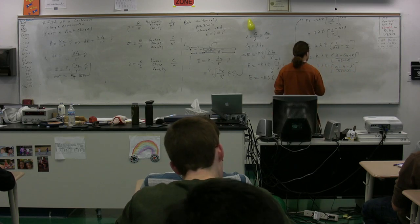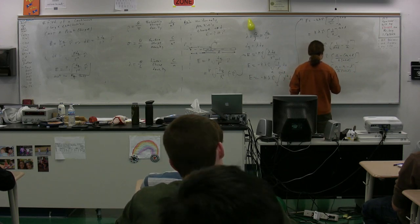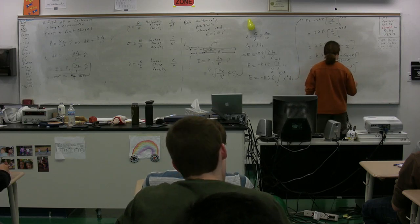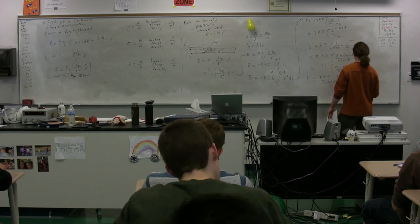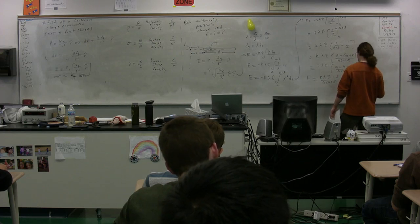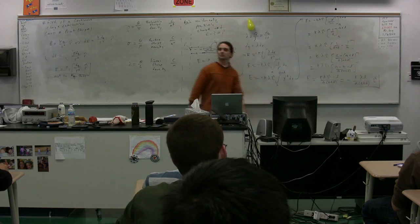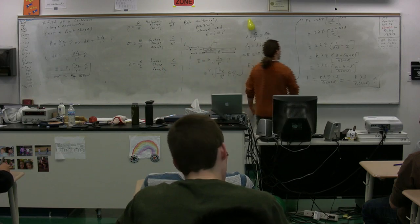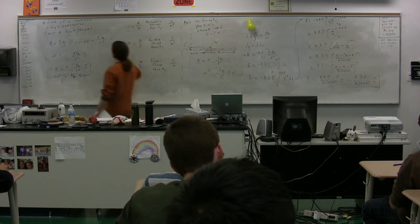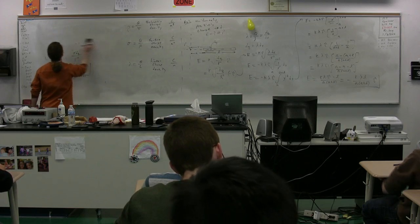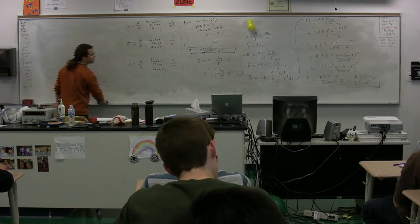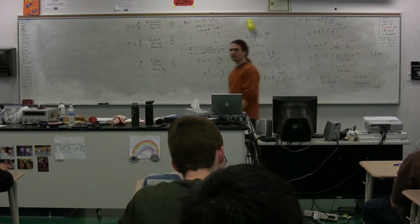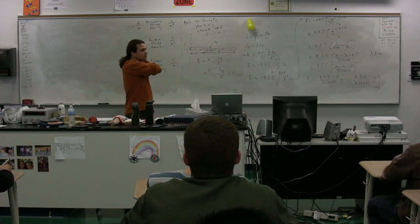So the electric field, then, is equal to k lambda i times negative l divided by the quantity a over a times l, or negative k lambda l over a times a plus l times i. But here's the thing. Lambda and l really should not be parts of our answer. Lambda times l is equal to what? Just q. Just q.